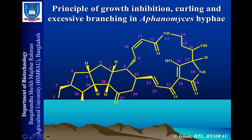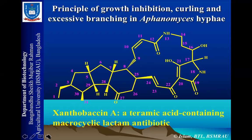The structure elucidation of this compound was very complicated. You can see lots of chiral points and stereostructures, which is why it took a very long time to completely elucidate the structure. We named it Glidobactin A — a tetramic acid-containing macrocyclic lactam antibiotic. It is a polycyclic, macrocyclic compound.